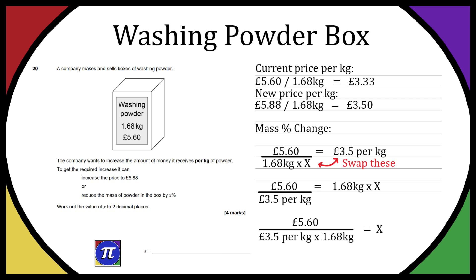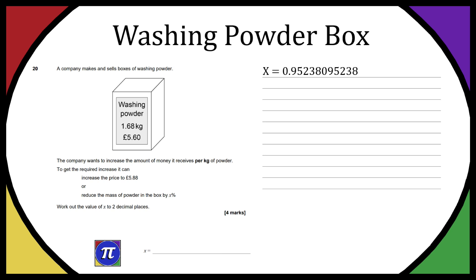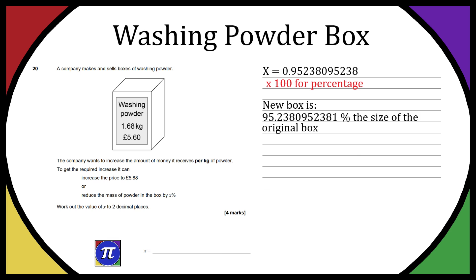So x equals approximately 0.95238095238. This means if we multiply 1.68 kg by this value, it reduces to exactly the right amount to give £3.50 per kilo. To turn x into a percentage, we multiply by 100, giving approximately 95.238...% — meaning the new box is about 95.23% the size of the original.